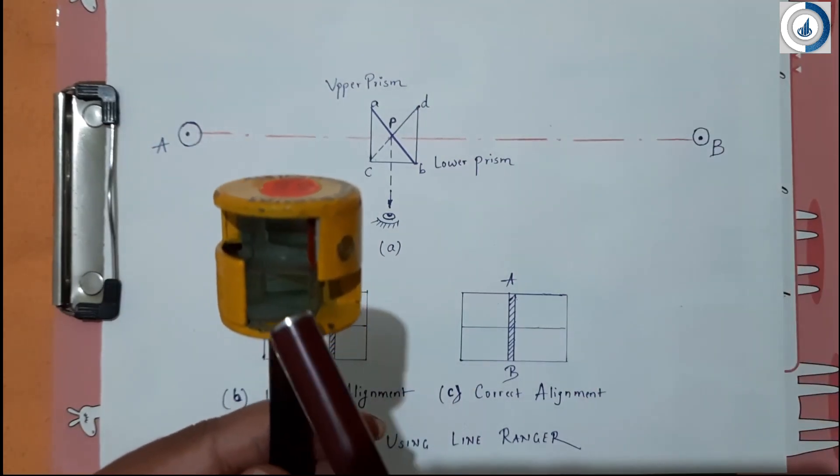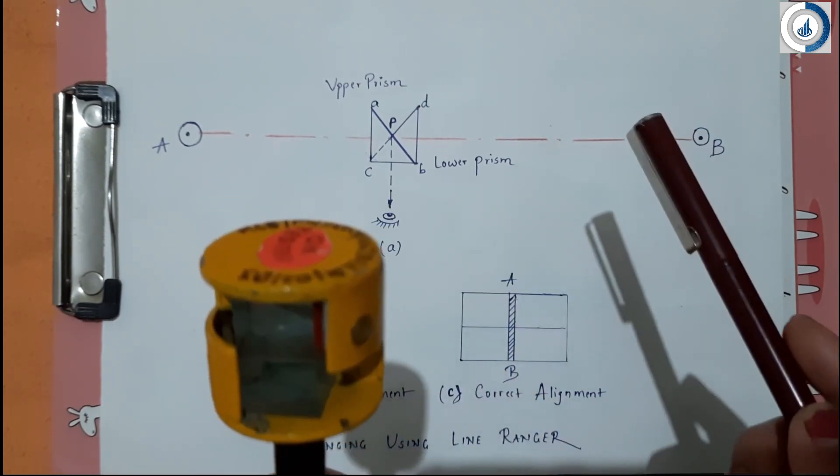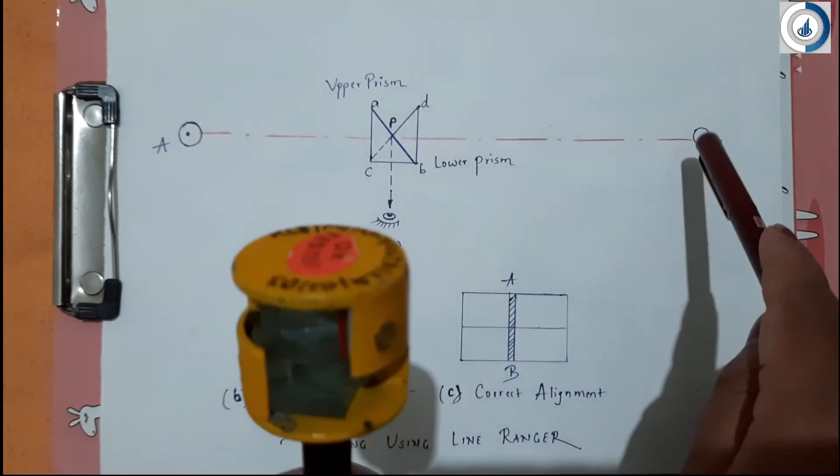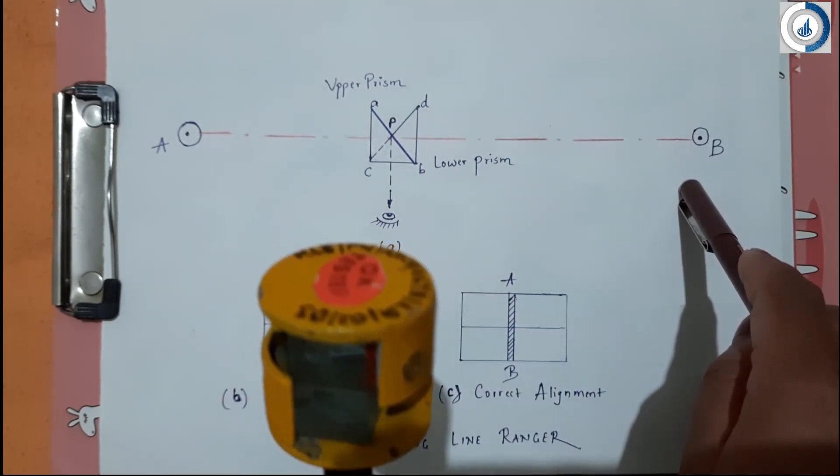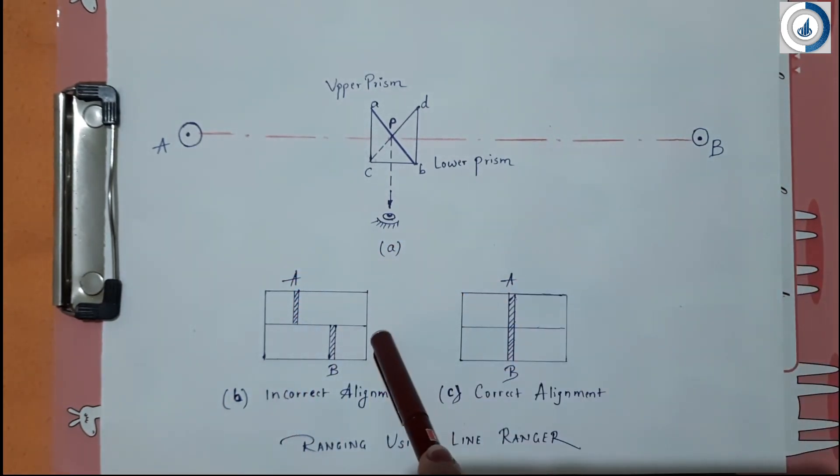The upper prism will receive rays from point A and the lower prism receives rays from point B. Then the observer views images of ranging rods at A and B which may or may not be vertical in line as shown in the figure. Then the surveyor has to move the instrument sideways.